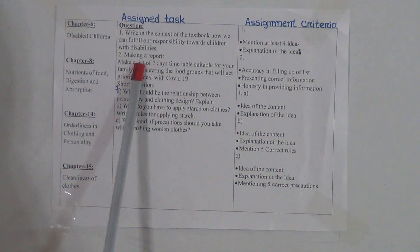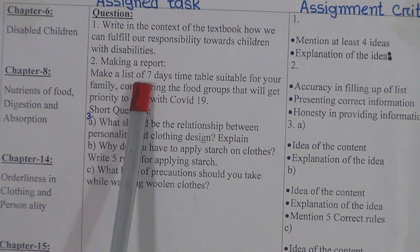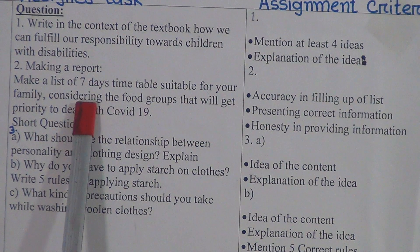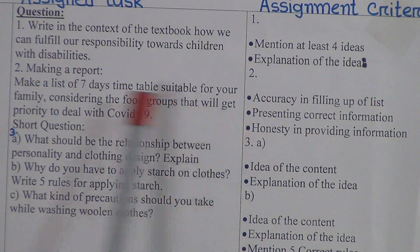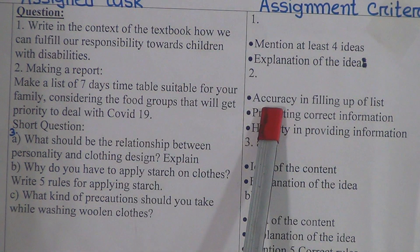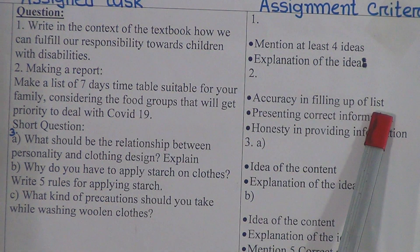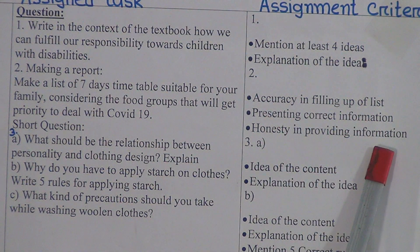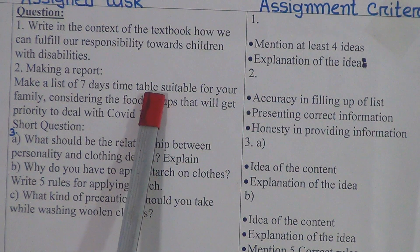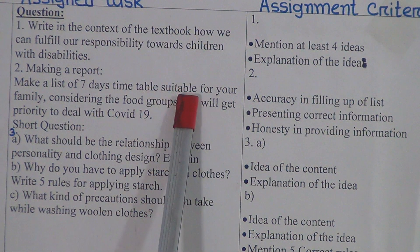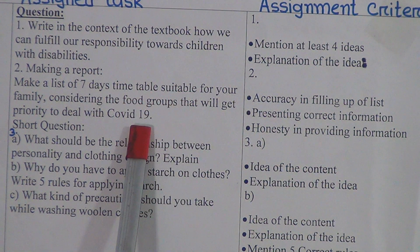Question two: make a report — make a list of a seven-day timetable suitable for your family, considering the food groups that will get priority to deal with COVID-19. The assignment criteria includes accuracy in filling out the list, presenting correct information, and honesty in providing information.